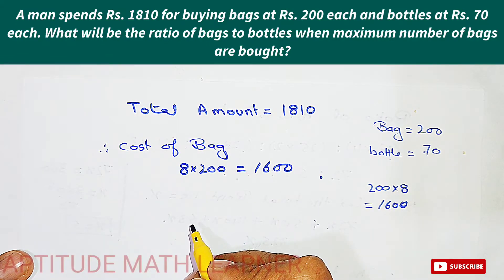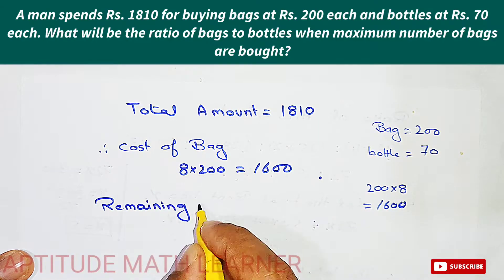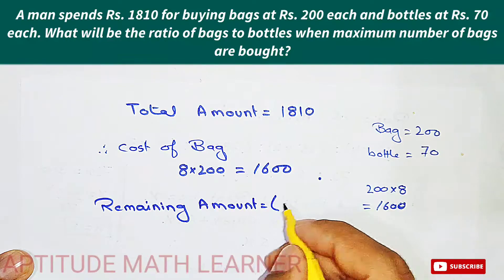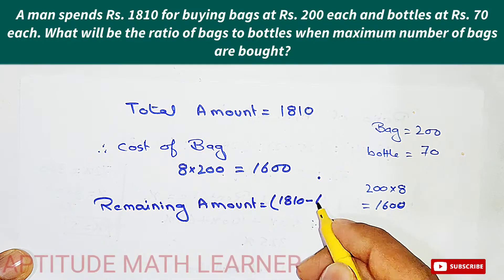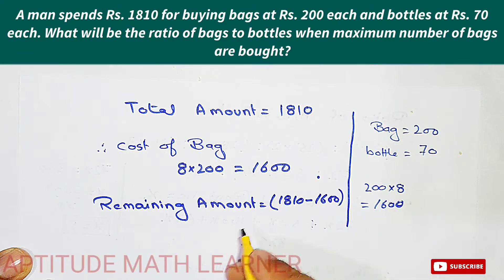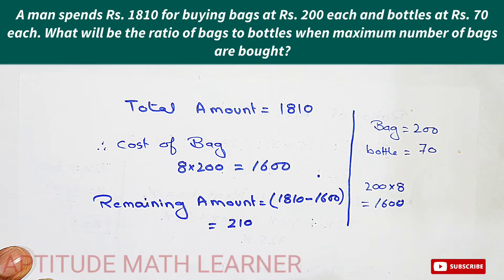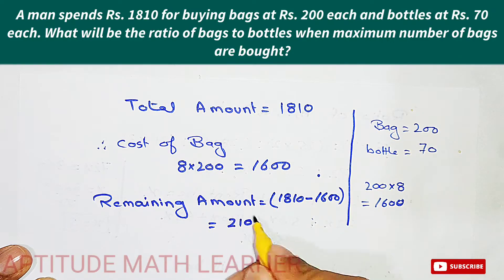The remaining amount will be used to purchase bottles. Remaining amount equals 1810 minus 1600, which gives us 210 rupees available for buying bottles.